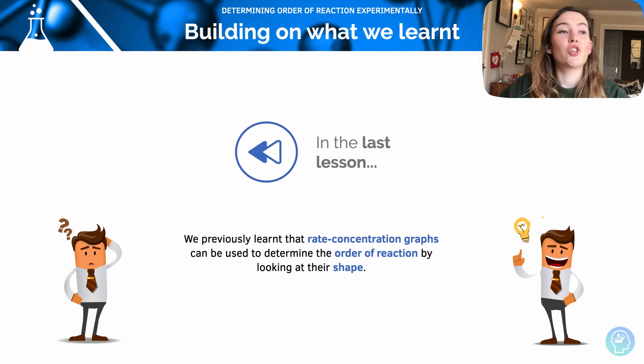In this session we're going to look at how we can use the initial rate of reaction when compared to controls to work out the order of reaction with respect to a particular reactant and the overall order of a reaction too. And we'll have a go at a practice question as well.